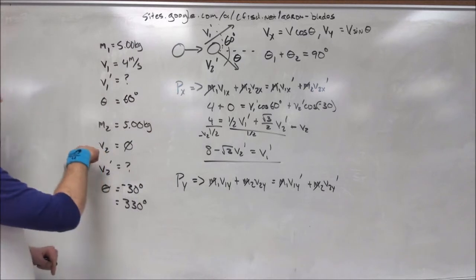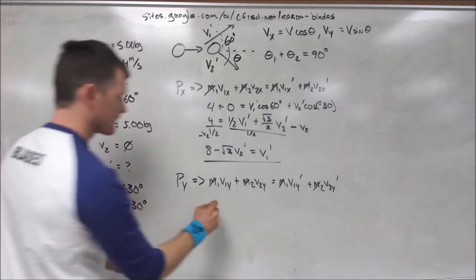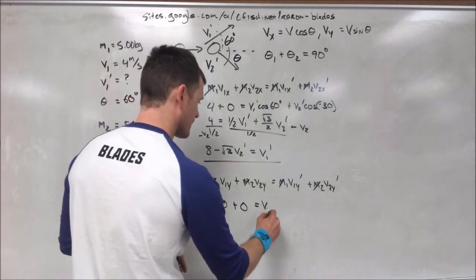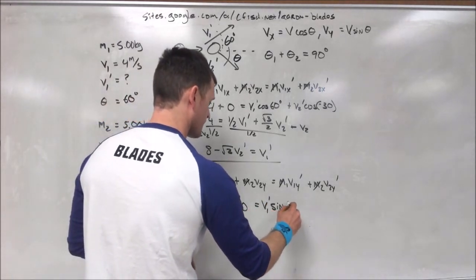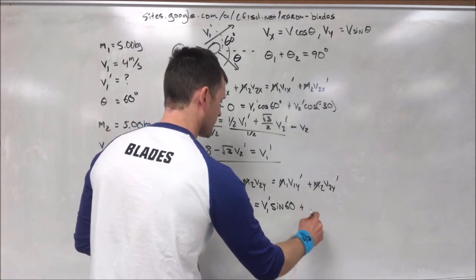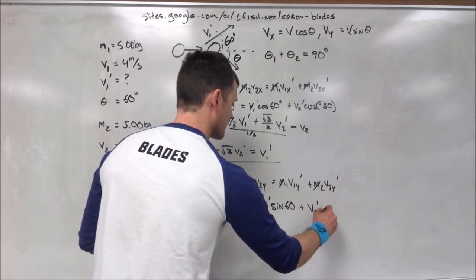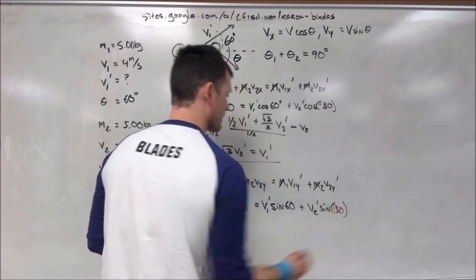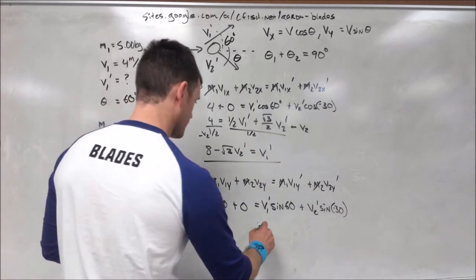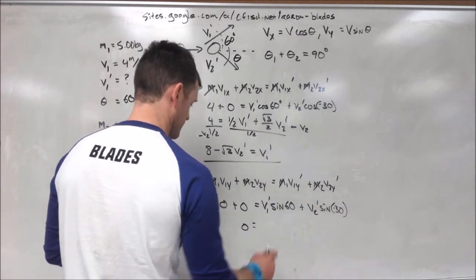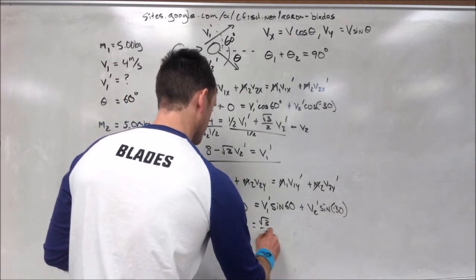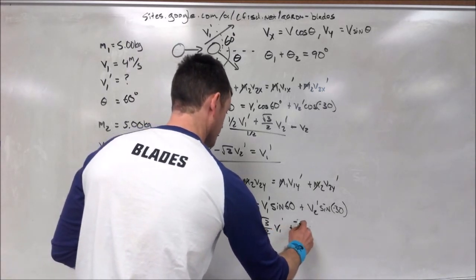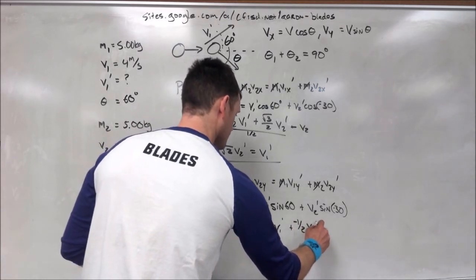So, same deal with the y. However, our initial velocity in the y direction for both objects is 0. And that leaves us with v1 prime times the sine of 60 degrees, plus v2 prime times the sine of negative 30, or 330 degrees. Again, we can figure those out. And 0 equals v1 prime times the square root of 3 over 2, minus 1 half v2 prime.